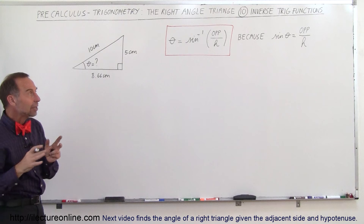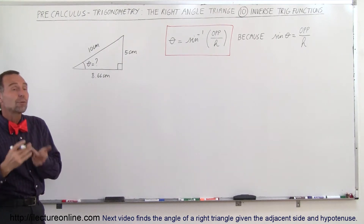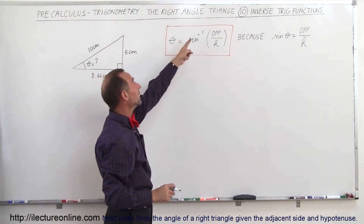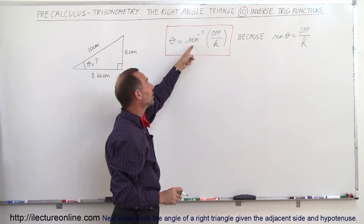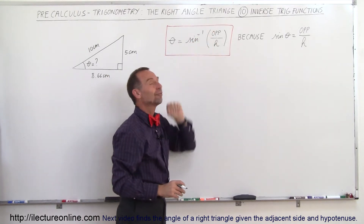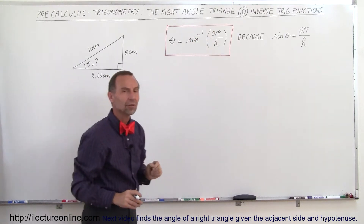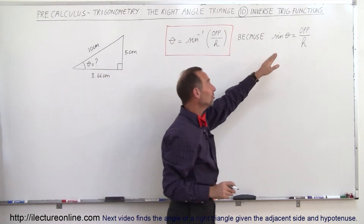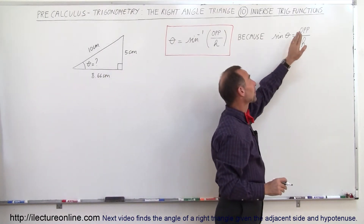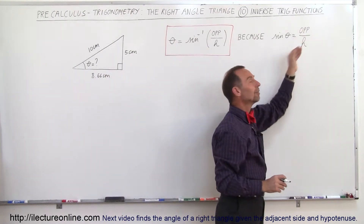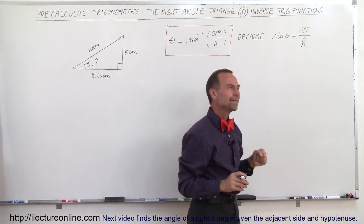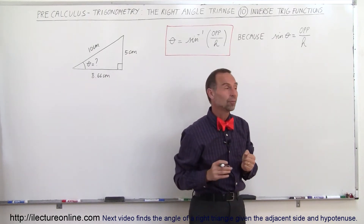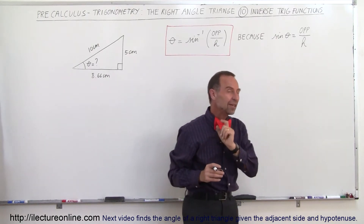To find the angle we can use an inverse trigonometric function. Theta, the angle, is equal to the inverse sine of the ratio of the opposite side divided by the hypotenuse. We know that because the definition of the sine of the angle is equal to the opposite side divided by the hypotenuse.